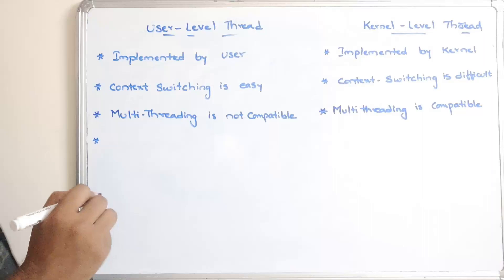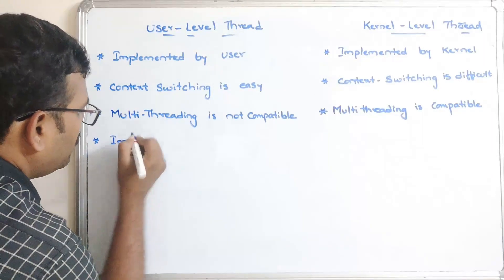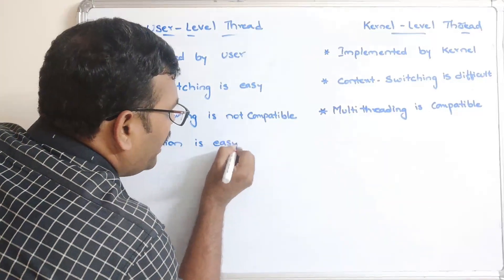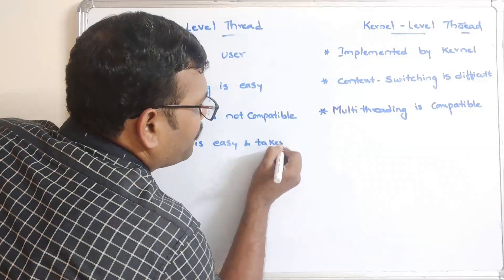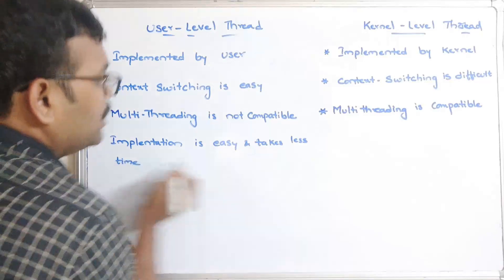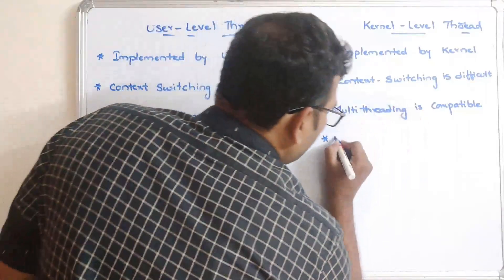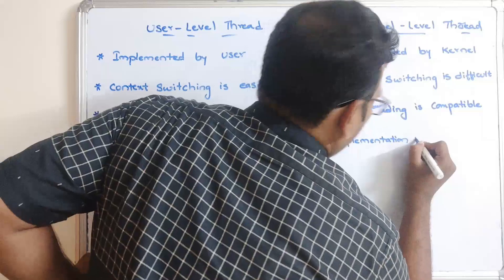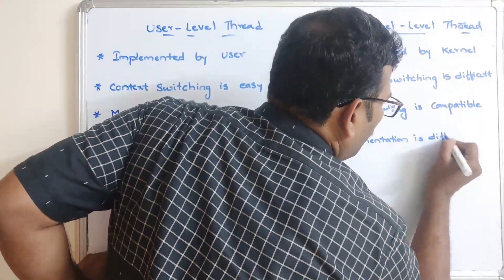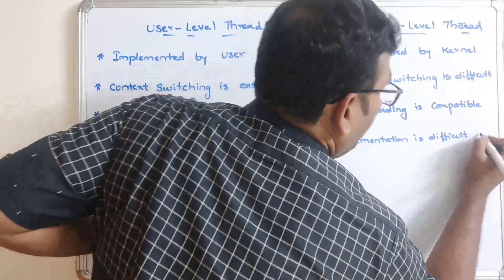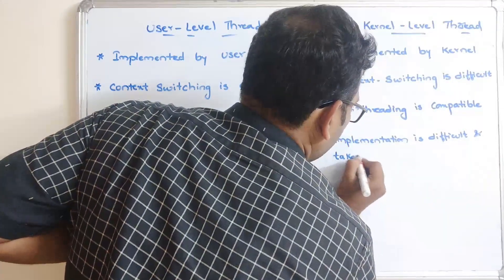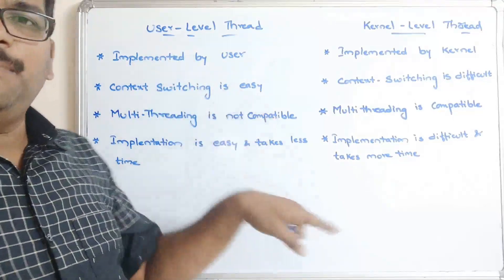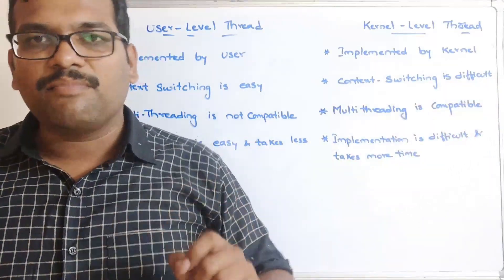The fourth difference is implementation. For user-level threads, implementation is easy and takes less time. For kernel-level threads, by comparison, the implementation is difficult or complicated and takes more time than user-level threads.